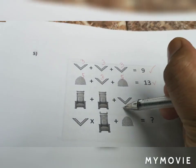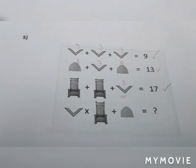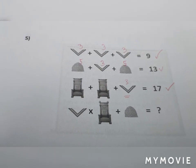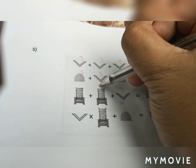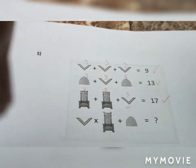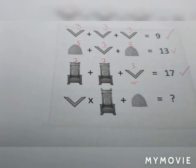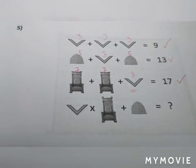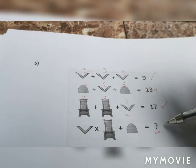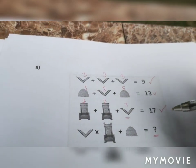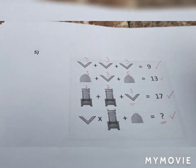For the third equation equaling 17, the figure is still equal to three. The value for the two chairs must be seven each — seven plus seven is 14, plus three equals 17. Now, what is our answer for the last equation?